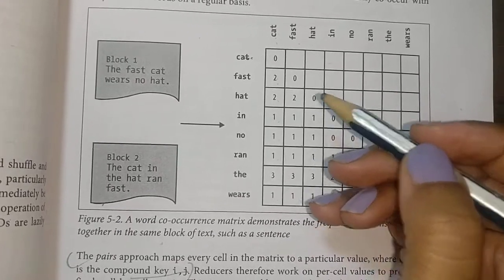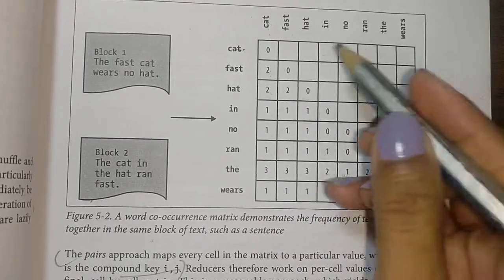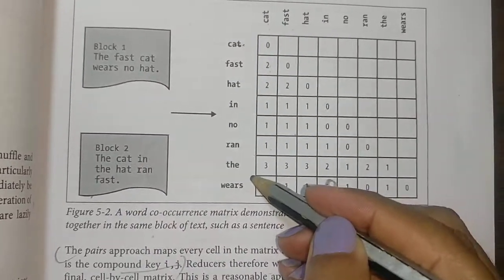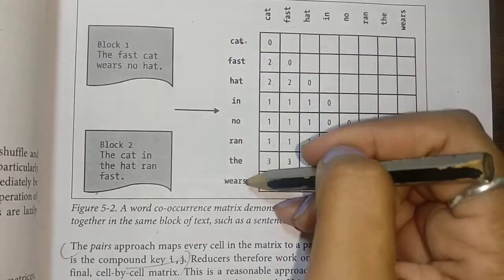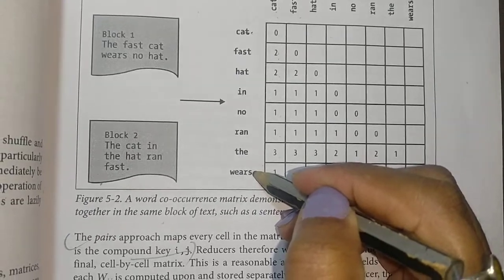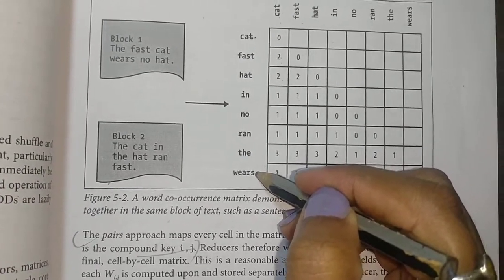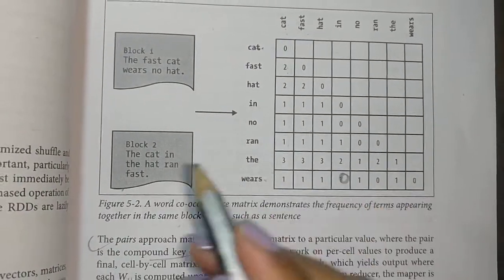For constructing the matrix, we write the unique words horizontally as well as vertically. Please note that we are not repeating the words. For example, 'the' comes twice in the same sentence, but I'm going to write it once only.